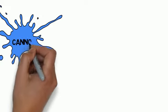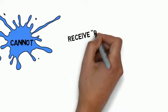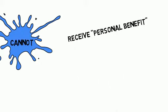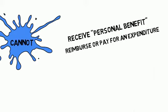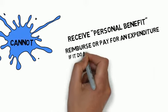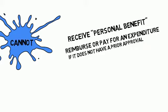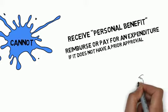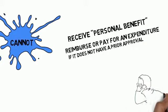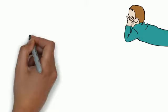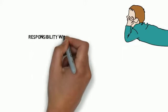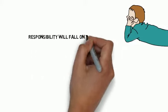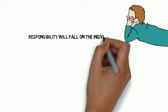How to spend money correctly: People cannot receive personal benefit if they are the approving authority for that expenditure. SG Finance cannot reimburse or pay for an expenditure that does not have prior approval. Student activity requests must be submitted and approved before the individual makes a purchase. The payment responsibility will fall on the individual who made the unauthorized purchase for materials or services. Any violation shall be considered an offense against the student body per 800 codes.